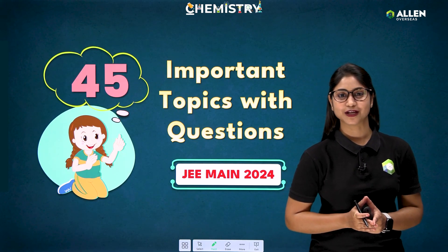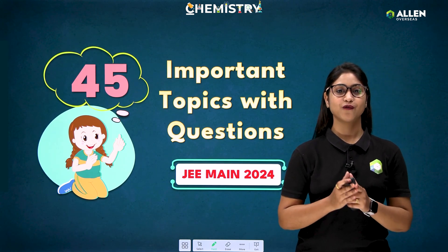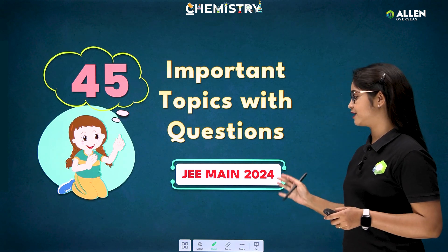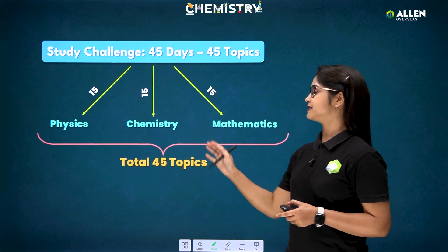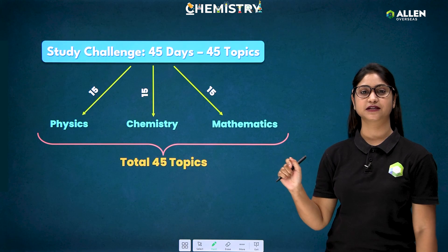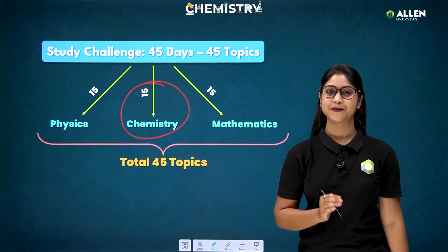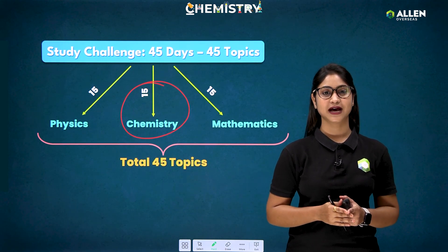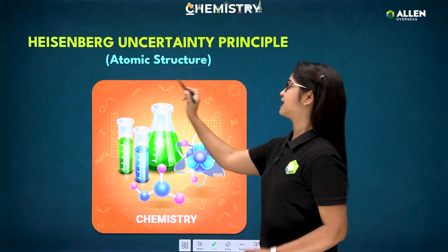Hello students, welcome to Allen Overseas. Today we have brought a very important series for you: 45 important topics in 45 days. This is important for your JEE Mains 2024. It is divided into three parts — 15 topics from physics, 15 from chemistry, and 15 from mathematics. I will be discussing the chemistry part, and today we start with the very first topic.